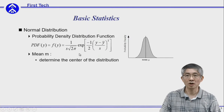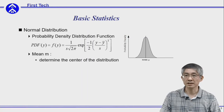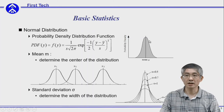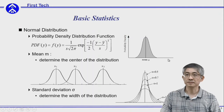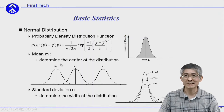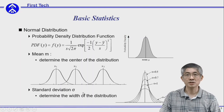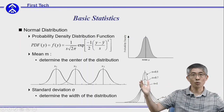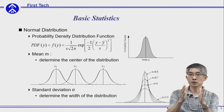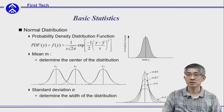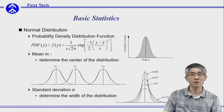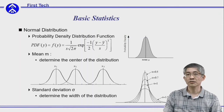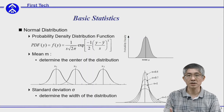This is the probability density function of normal distribution, where sigma is the standard deviation and y-bar is the mean of your data. The mean controls the center of your distribution, and the standard deviation sigma controls the width. For a larger standard deviation, the distribution will be flatter and wider; for a smaller standard deviation, your distribution will be narrower and higher. So a higher standard deviation generally means your distribution has lower quality, while a smaller standard deviation means your output is very consistent.